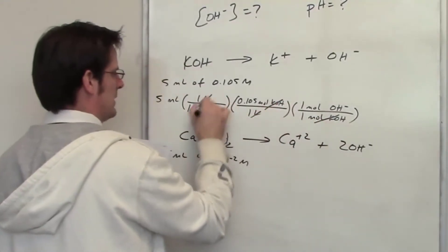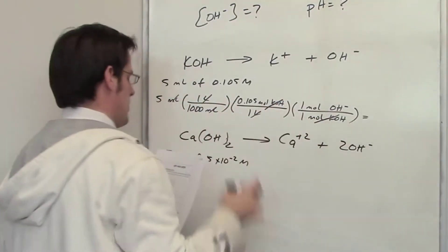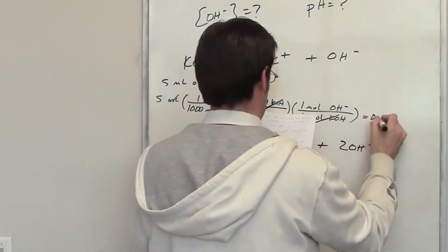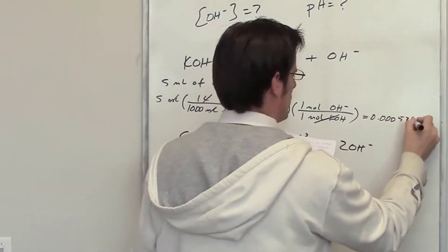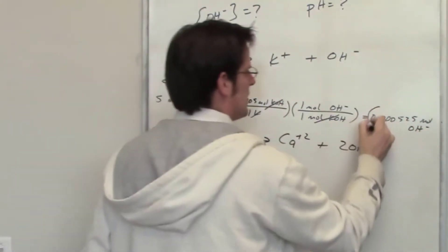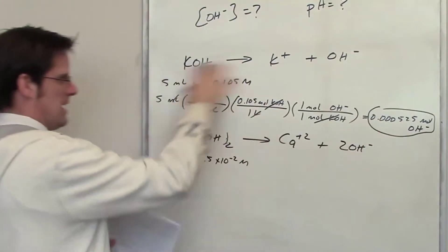My moles of KOH cancel each other out, my liters cancel each other out, my mLs cancel each other out, and I throw that into my calculator and I end up getting .000525 moles of hydroxide from the KOH. So this is the amount of moles of hydroxide from this.